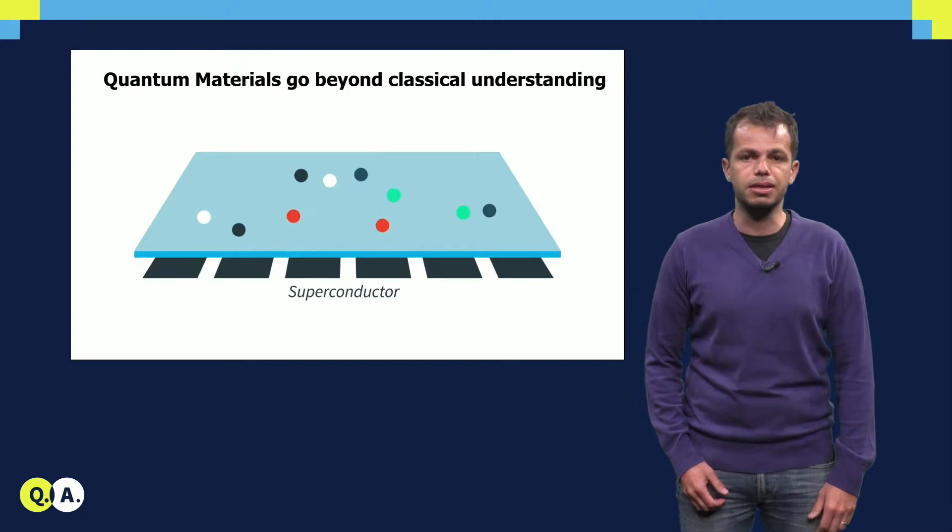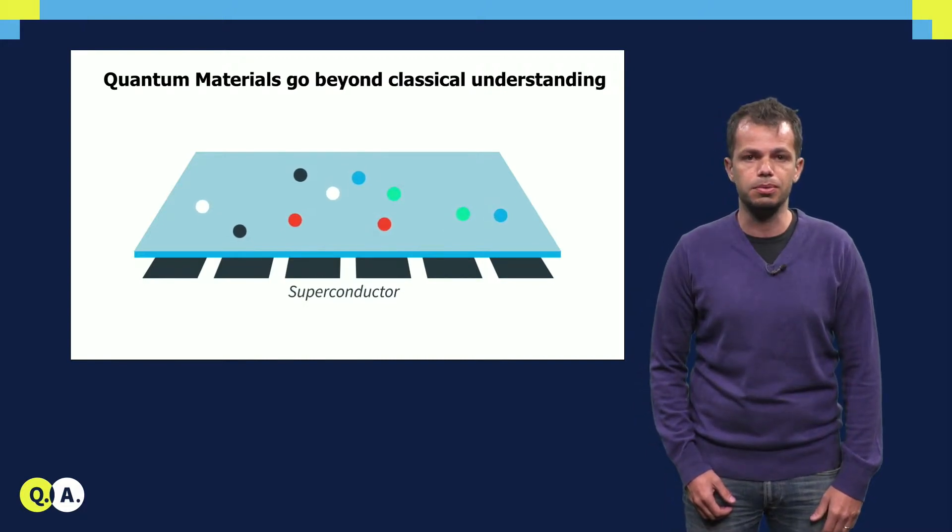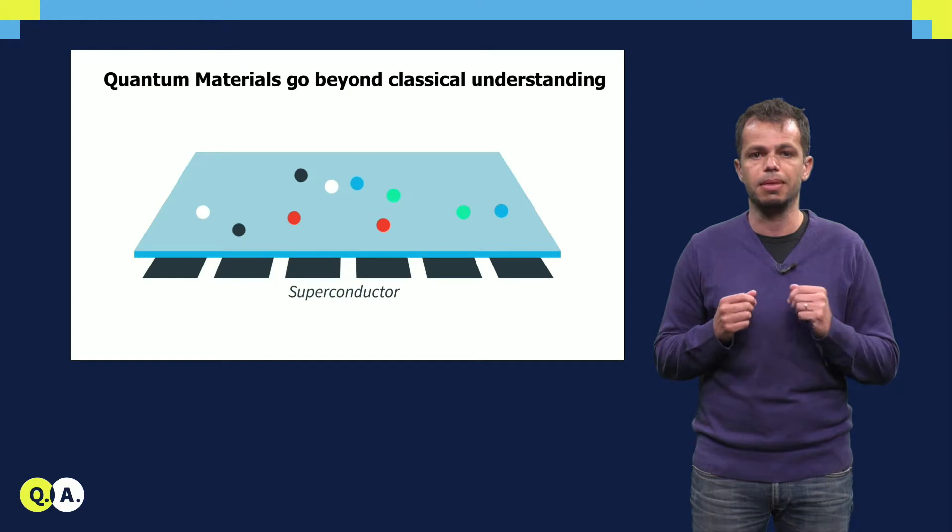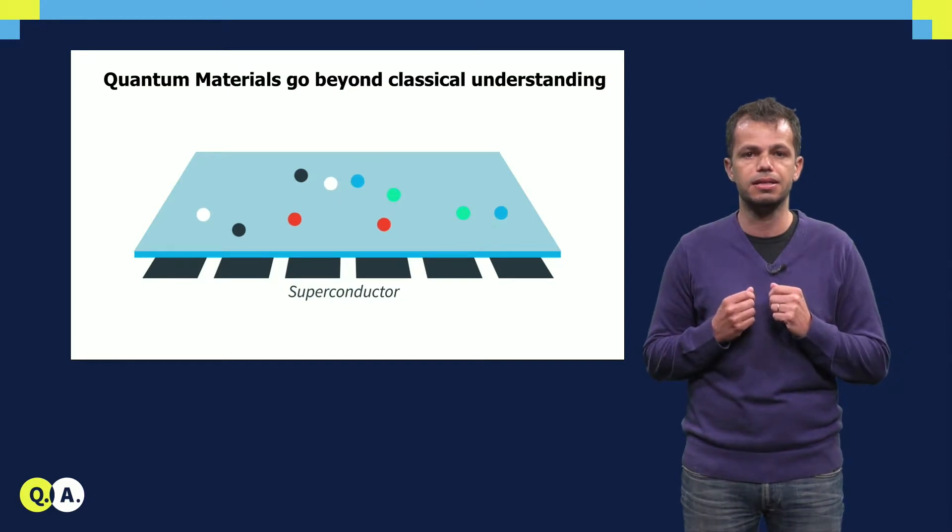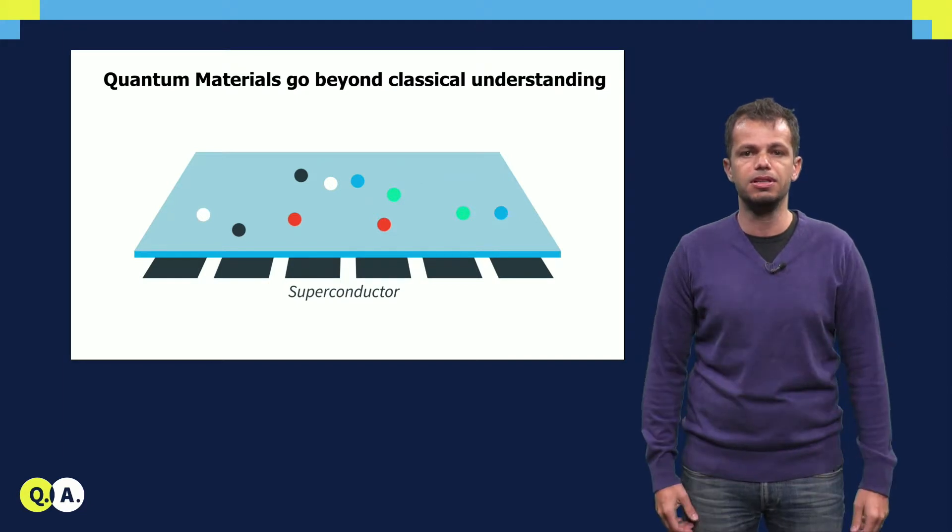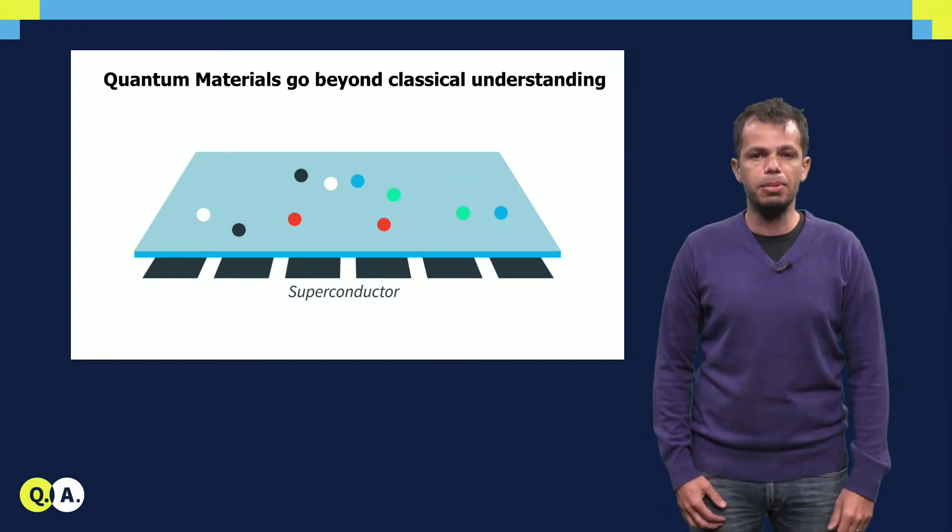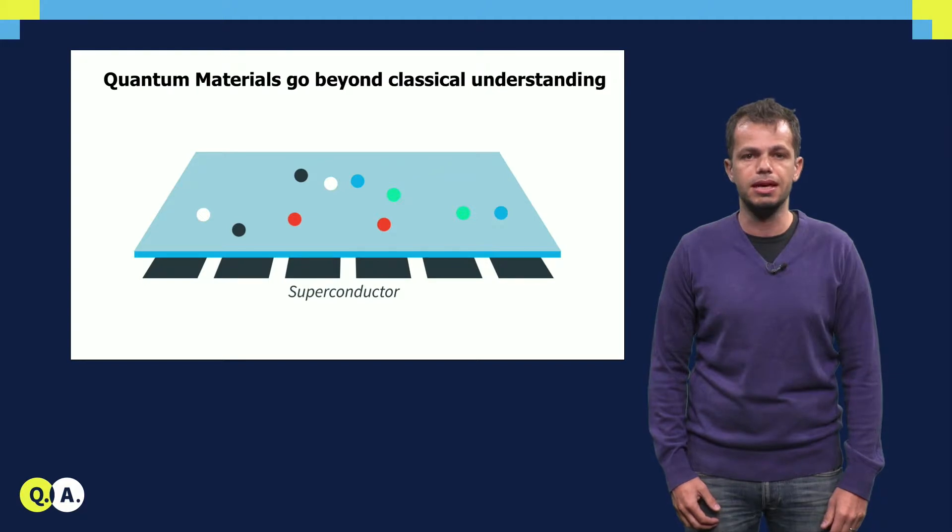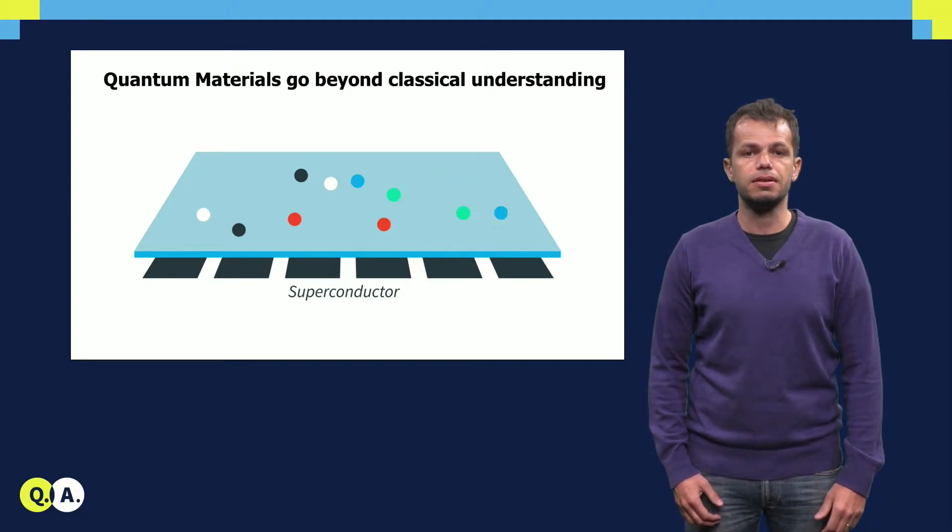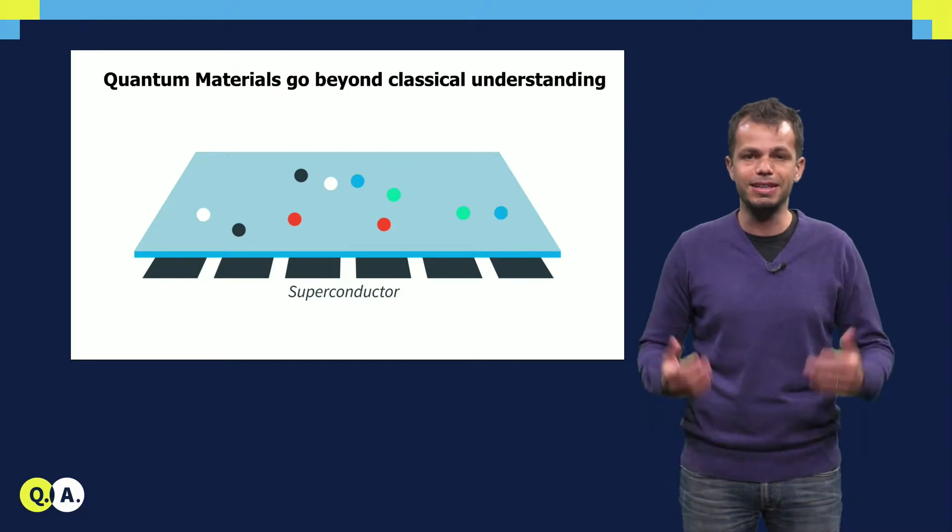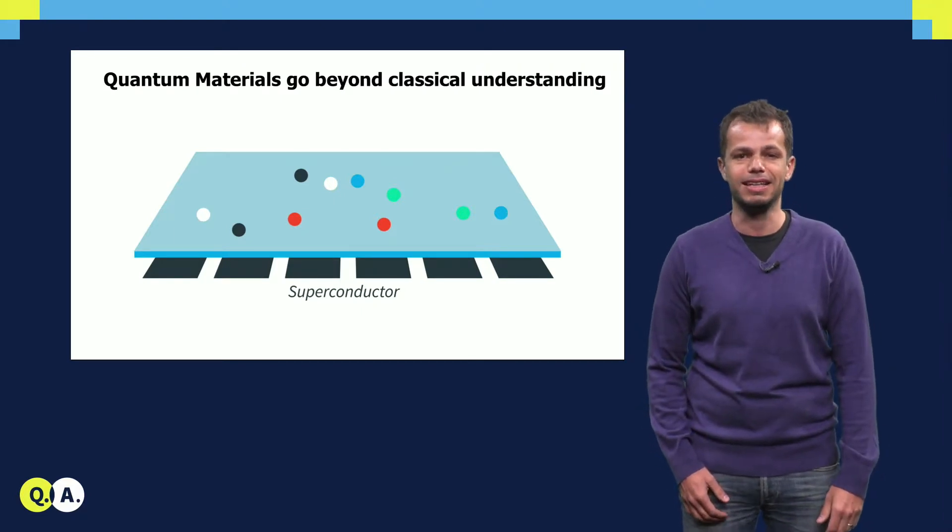In superconductor materials, the interaction between electrons mediated by the vibrations of the crystal lattice creates the so-called Cooper pairs. Differently from individual electrons, Cooper pairs can share the same quantum state. Superconductivity emerges from the concerted state of pairs that propagates without electrical resistance through the crystal. And certainly you need quantum mechanics to understand this.